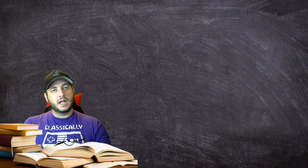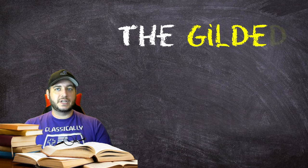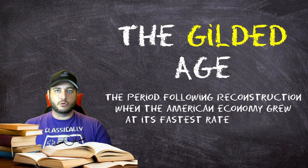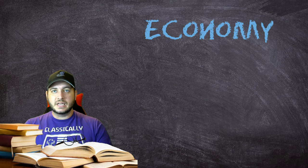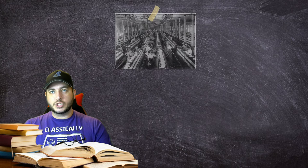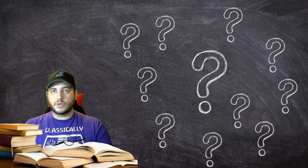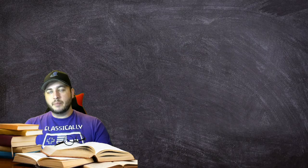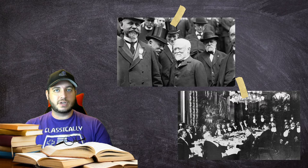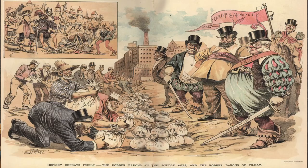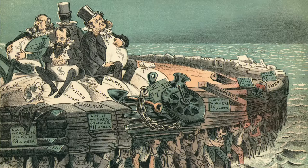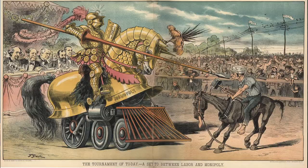Our second unit covers the Gilded Age, which refers to the period following Reconstruction when the American economy grew at its fastest rate in history. This was a period of transformation in the economy, technology, government, and social customs of America. Gilding refers to the process of coating cheap metals with a thin layer of gold. While America became more prosperous with unprecedented growth, there was a sinister side — greedy, corrupt industrialists, bankers, and politicians enjoyed extraordinary wealth and opulence at the expense of the working class. Wealthy tycoons, not politicians, held the most political power.